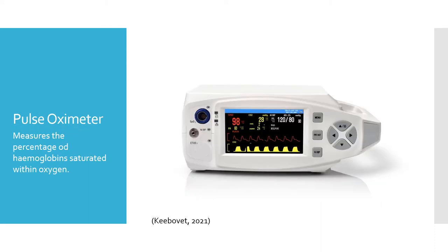Pulse oximeter. A pulse oximeter measures the potential of hemoglobin saturated within the blood. It is also seen as an indirect measurement of arterial oxygen levels. This will be used before and during surgery, as well as after surgery to monitor oxygen levels within the blood.